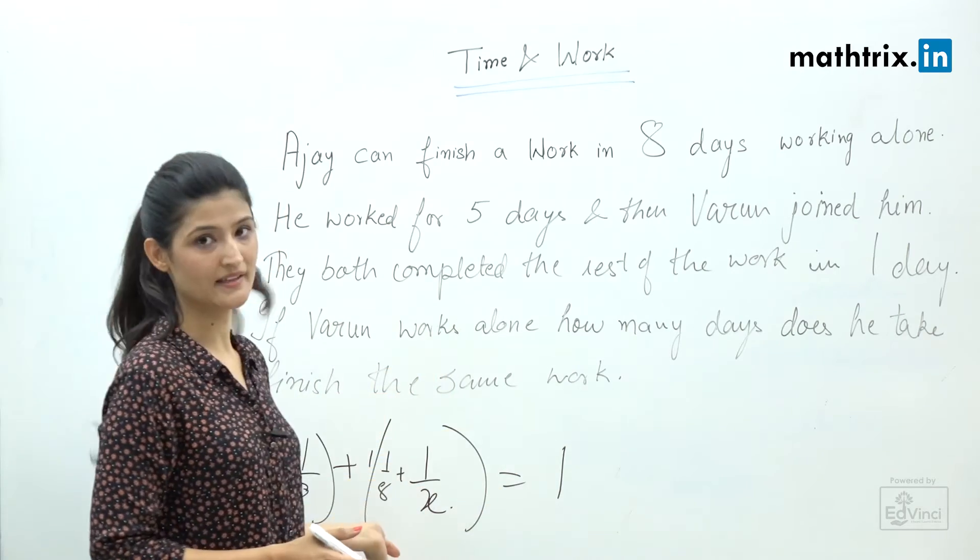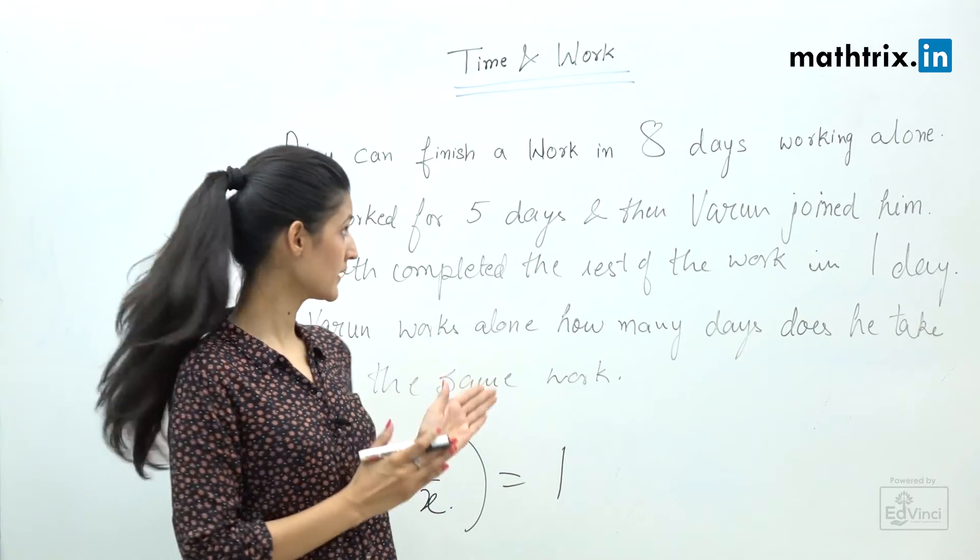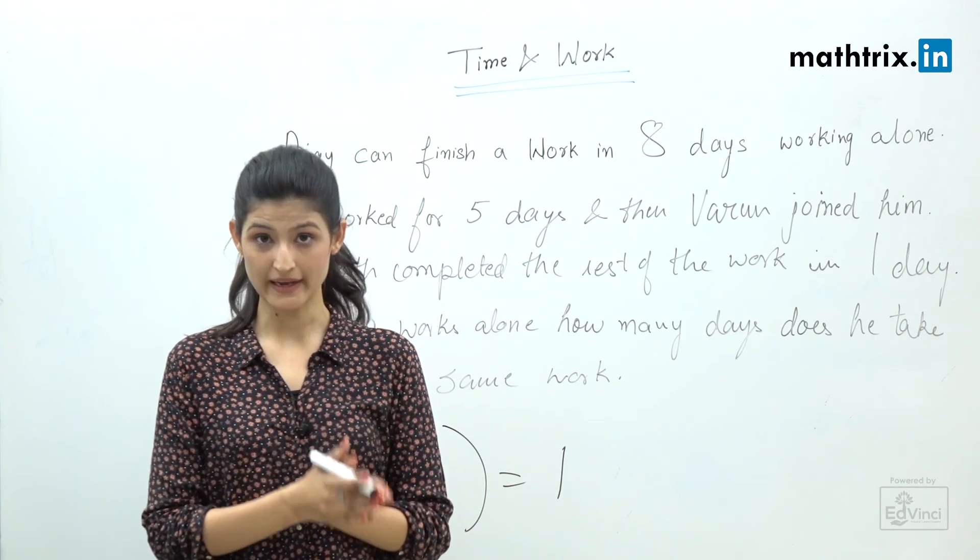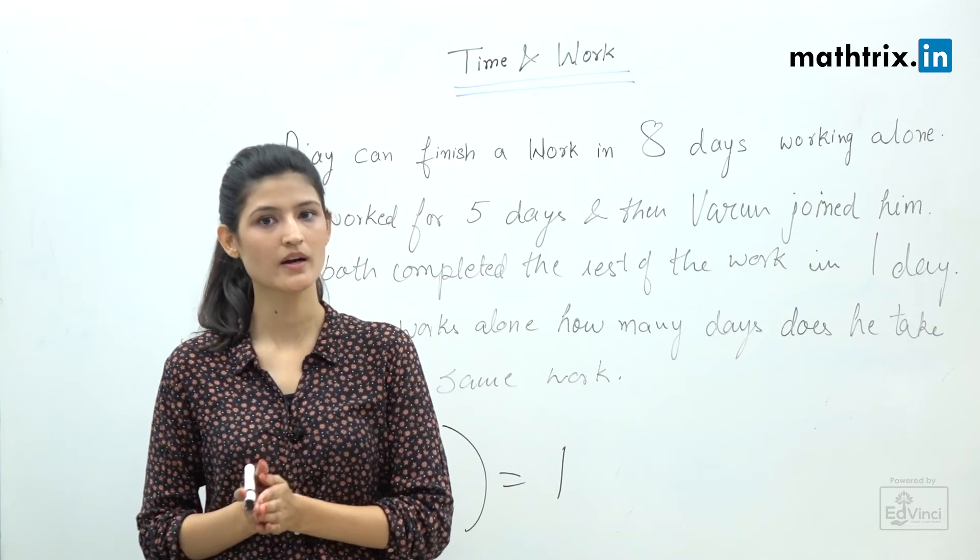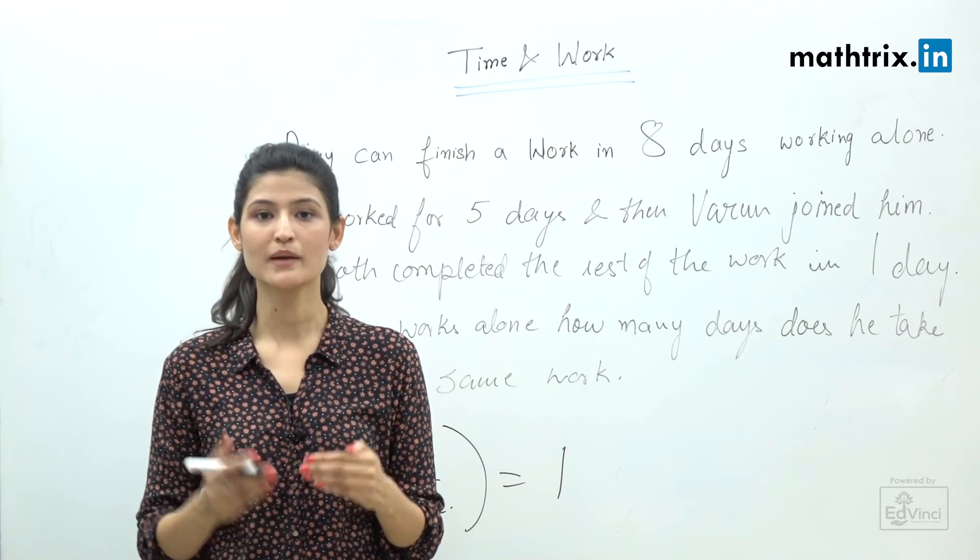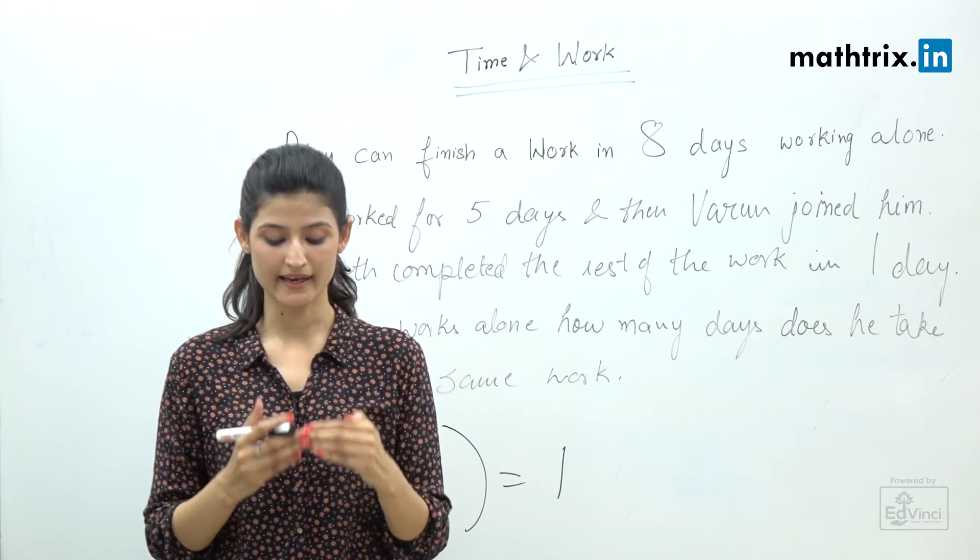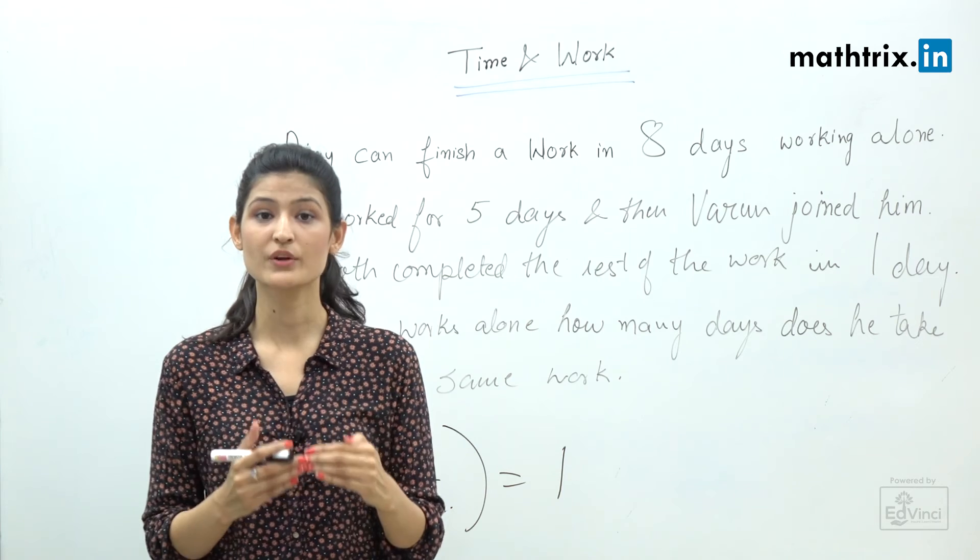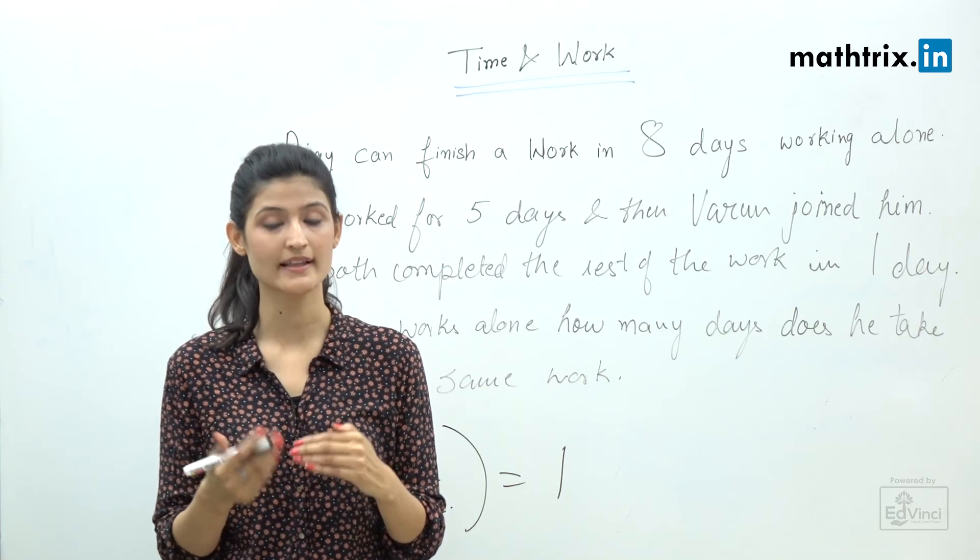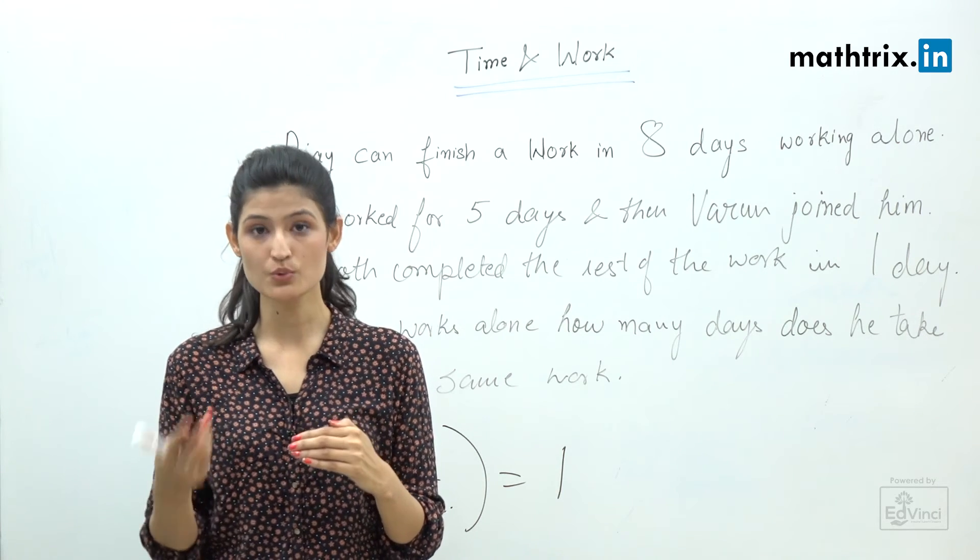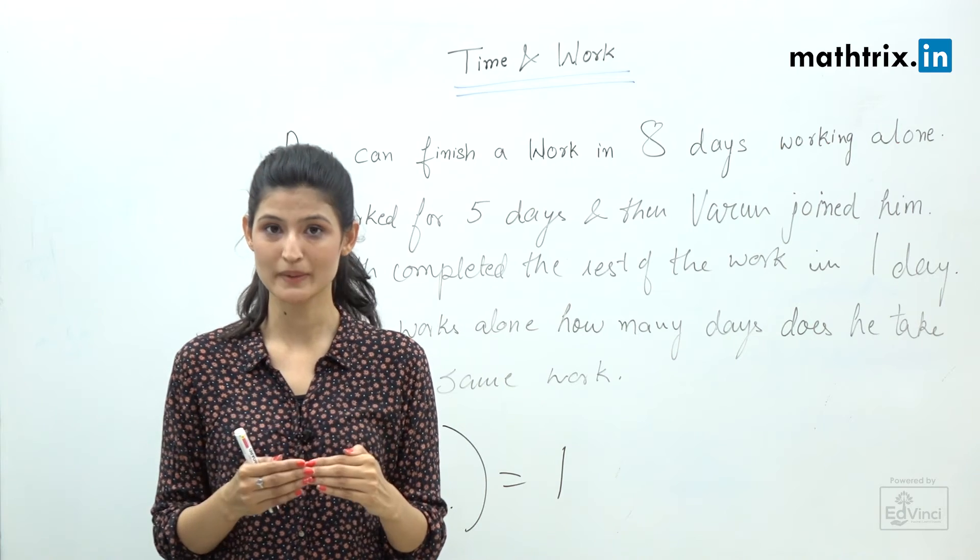I'll revise this question for you: Ajay has worked for 5 days and 3 days of work is left. On the 6th day Varun joined. If Varun had not joined, Ajay would have continued the work for 2 more days. That means Varun has done 2 days of work in 1 day, which means his speed is twice Ajay's speed.